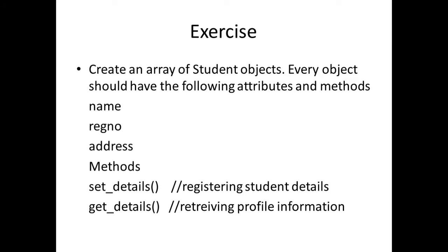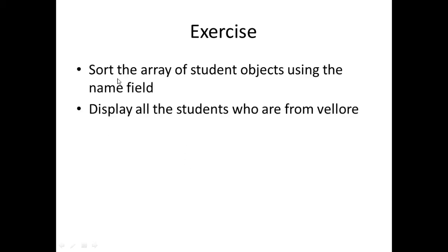We will take up these exercises with respect to array of objects. The very first exercise is to create an array of student objects, where each student object has the following properties: name, registration number, and address. We will have two methods — one for setting the details for every student, and get details for retrieving profile information as a string.